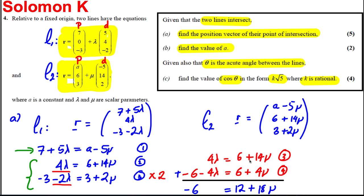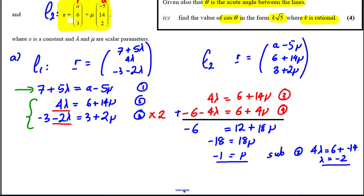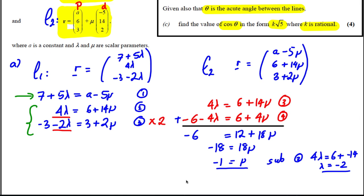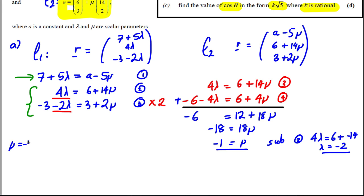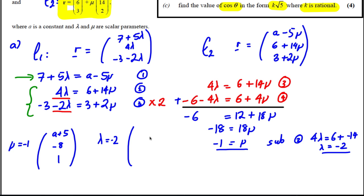We've found μ and λ, but we still need the point of intersection. Substituting μ = −1 into line 2 gives x = a + 5, y = 6 − 14 = −8, z = 3 − 2 = 1. Substituting λ = −2 into line 1 gives x = 7 − 10 = −3, y = 4 × (−2) = −8, z = −3 − (−4) = 1.